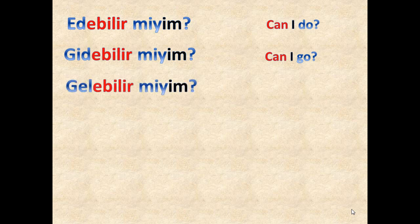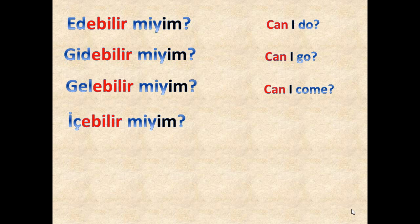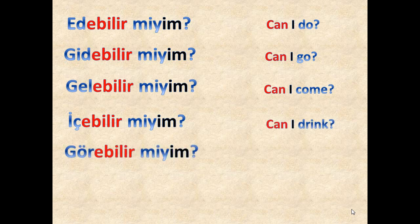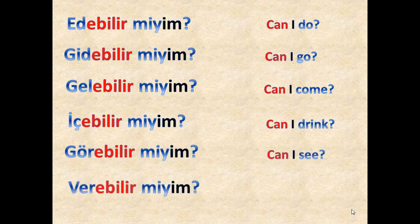The question form: 'Gelebilir miyim?' — can I come? 'İçebilir miyim?' — can I drink or may I drink? 'Görebilir miyim?' — can I see or may I see? 'Verebilir miyim?' — can I give or may I give?